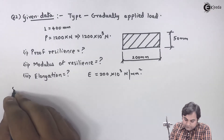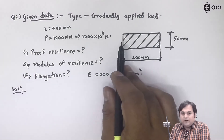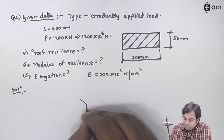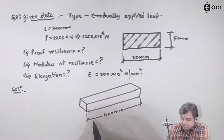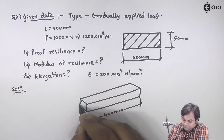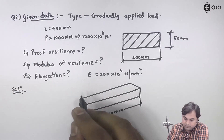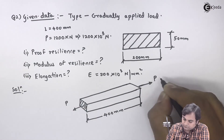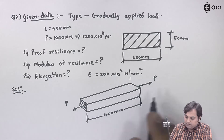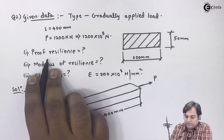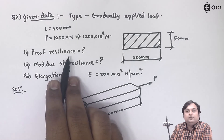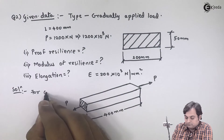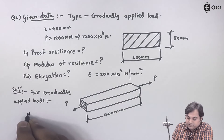Solution: the bar is elongated. The bar is 400 mm long and is subjected to an axial load. The load is applied gradually as mentioned in this question. The first part is to calculate proof resilience. To calculate proof resilience we need to know the value of stress.